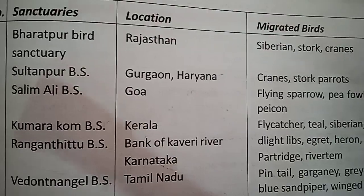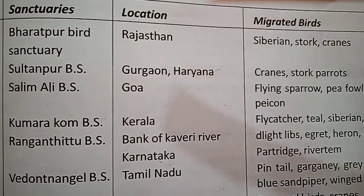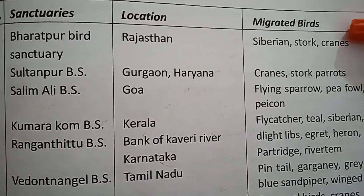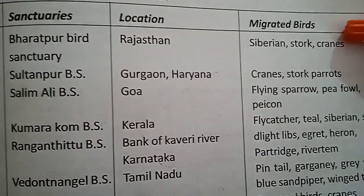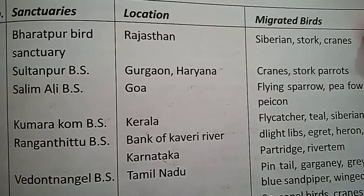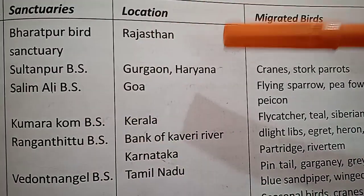Bharatpur Bird Sanctuary, located in Rajasthan. The migratory birds found here are Siberian storks and cranes. Next is Sultanpur Bird Sanctuary.